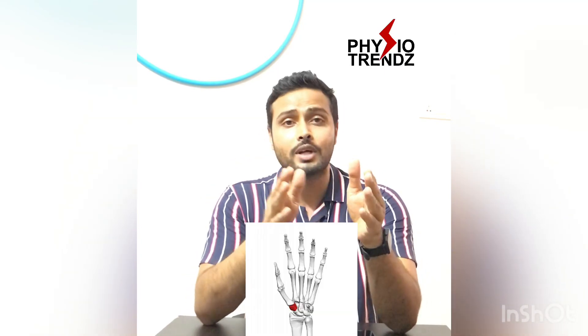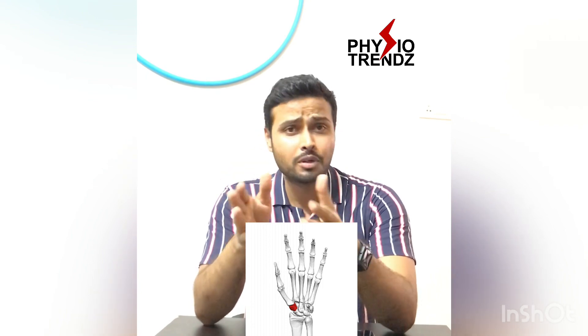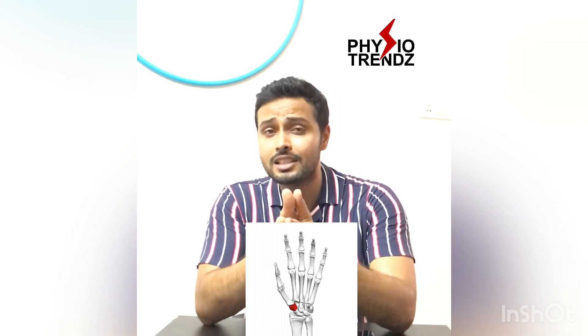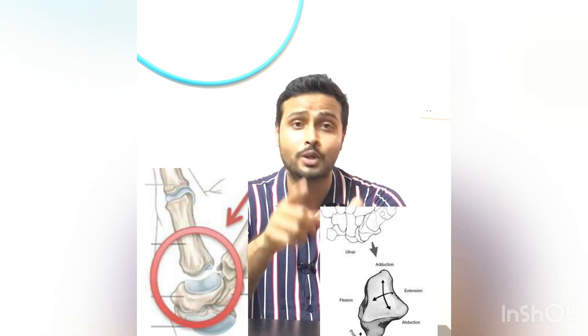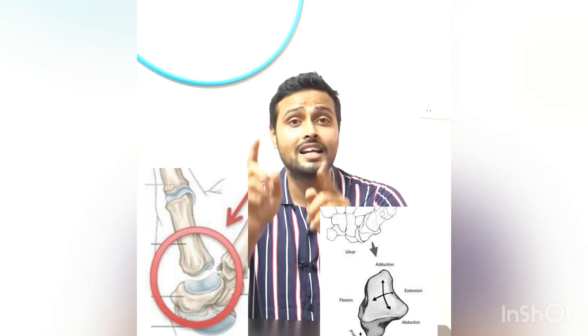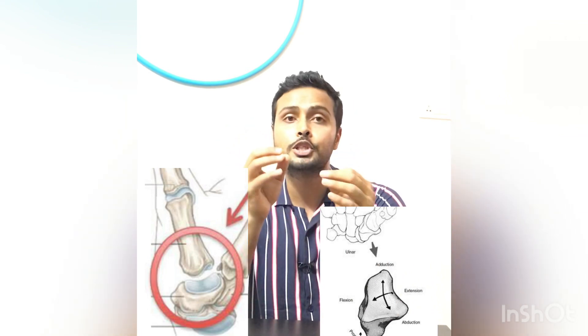I have seen lots of people getting confused about the first carpometacarpal joint glide. It is a multi-axial joint and it is a saddle type of joint, which is why we need to understand which moment the concave-convex rule is applicable and which moment the convex-concave rule is applicable. Don't worry, Physio Trends is here and I am going to simplify it for you all.